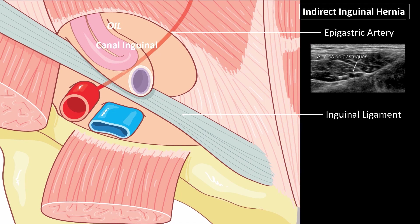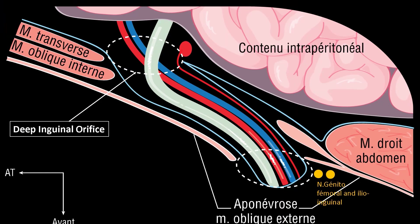In the case of an indirect inguinal hernia, which is the most common hernia, the hernia lies outside the epigastric vessels. As we can see in this diagram, outside the epigastric artery is located the deep inguinal orifice, and in indirect inguinal hernias the peritoneal contents will pass through this deep inguinal orifice and enlarge it.